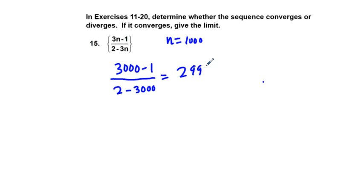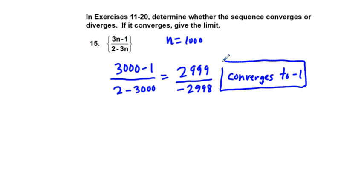We'll get 2,999 over 2 minus 3,000, which would be negative 2,998. So this number is going to be very close to negative 1. So we'll say converges to negative 1. And there's another shortcut we can use which we call BETSY. BETSY, which means bottom equals top, use coefficients. So in this case, the highest power of n is n to the first power in the top, n to the first power in the bottom. So our convergent is going to be that coefficient of 3, 3n, or the denominator's coefficient of n, which is negative 3. And 3 over negative 3 is negative 1. So kind of a shortcut.